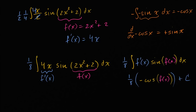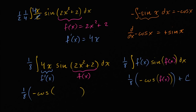Instead of expressing it in terms of f of x, we just say it in terms of two x squared plus two. So it's going to be one eighth times negative cosine of two x squared plus two, plus C.